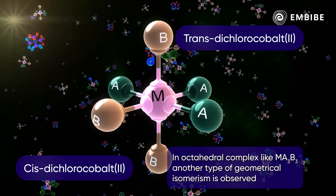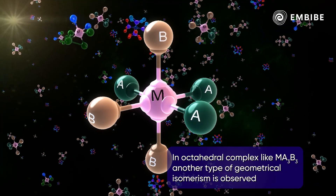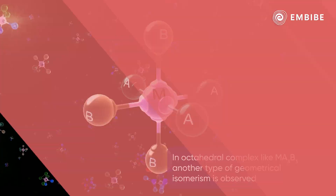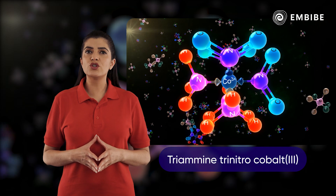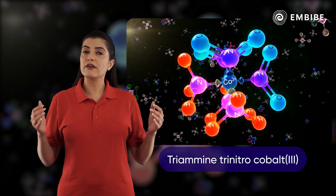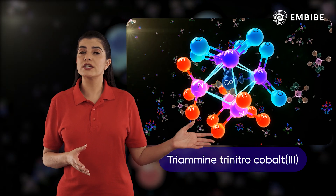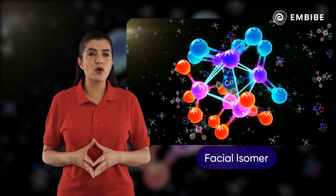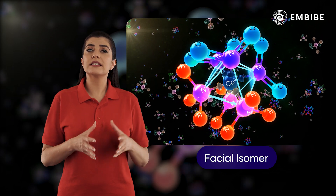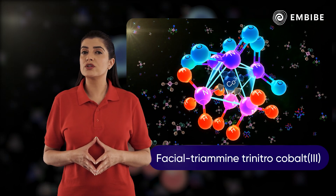In octahedral complexes of the type ma3b3, another type of geometrical isomerism is observed. For example, in triaminetrinitrocobalt(3) ion, if three identical ligands occupy one face of the octahedron, it is called the facial isomer. This complex is called facial triaminetrinitrocobalt(3) ion.